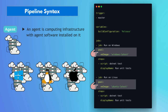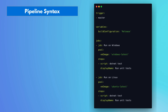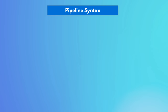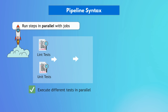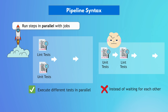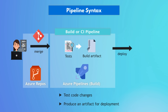Another very common use case for multiple jobs is running steps in parallel so that the build overall is faster. This could be running multiple tasks at the same time, or testing different parts of the application so they don't have to wait for each other. By creating multiple jobs for all these tests, you can run them in parallel on different environments. Overall, the main task of the build pipeline is to test the code changes and, if everything is fine, produce an artifact that we can deploy.